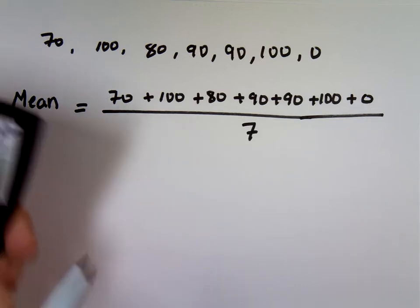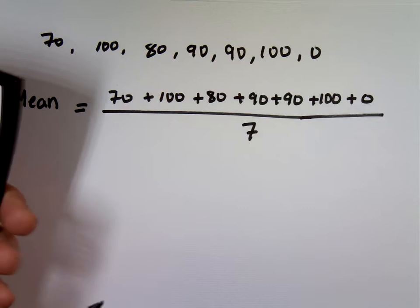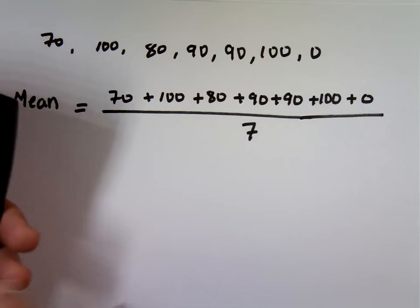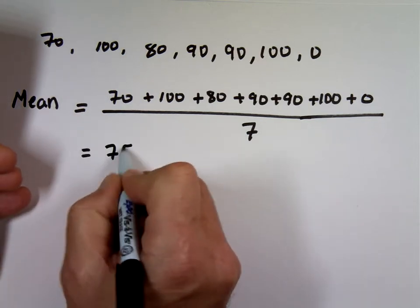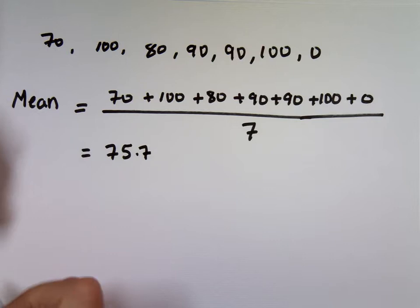So what's the average? What's your mean? We take all these values and we add them. Do we include the zero? Yeah, sure you do. Divided by seven. So 70 plus 100 plus 80 plus 90 plus 90, and you divide that by seven, and your average is 75.7. That's a C for the course.